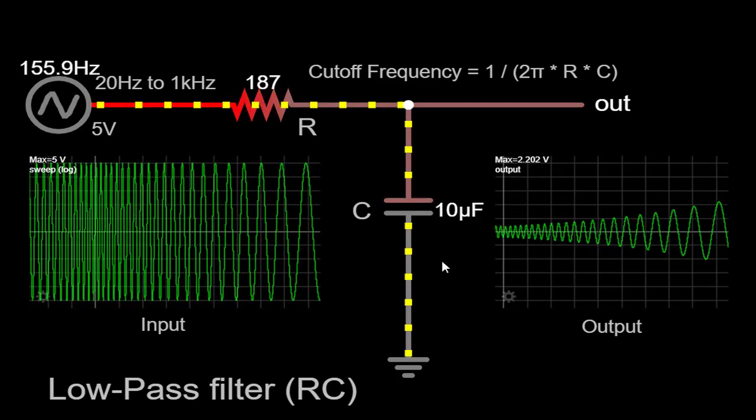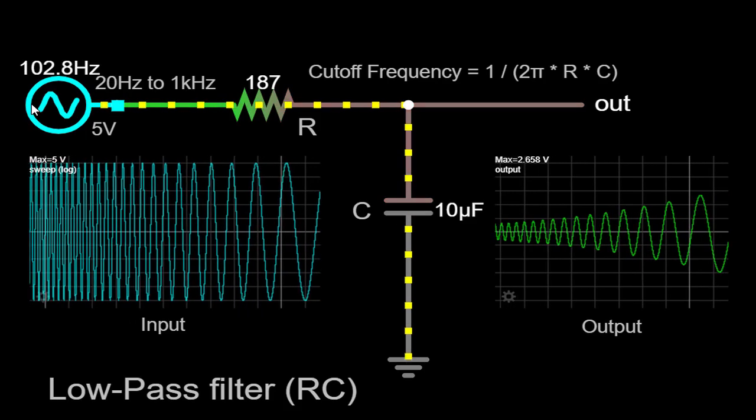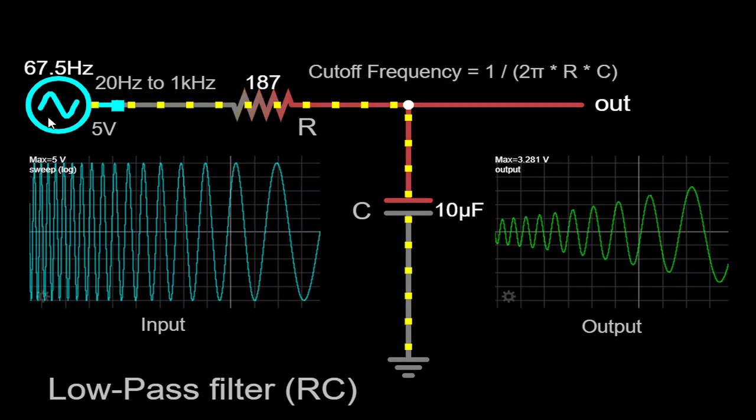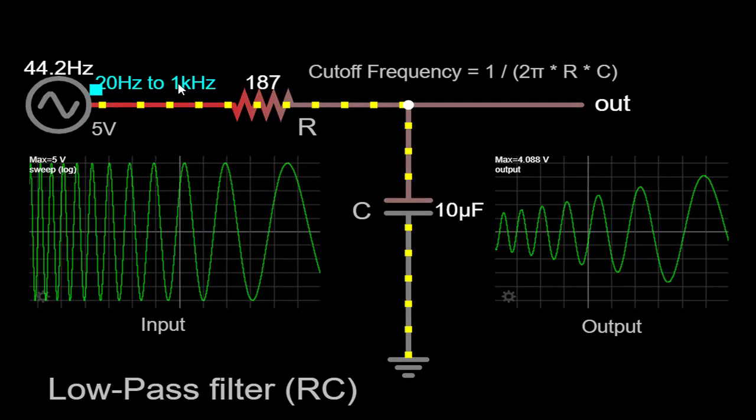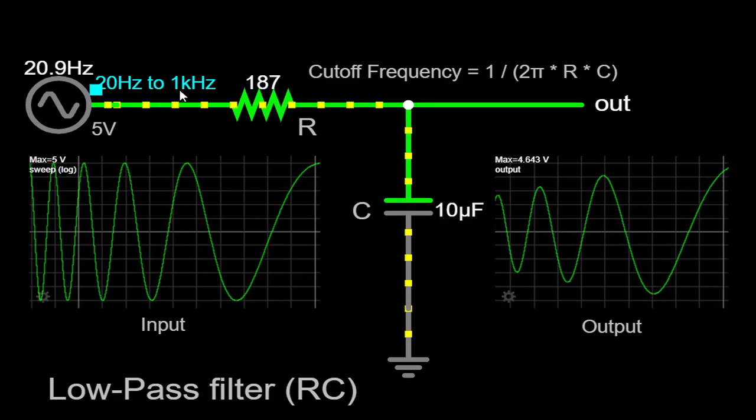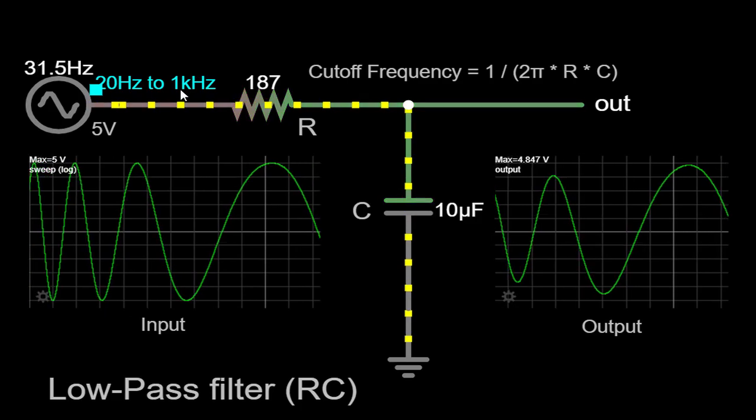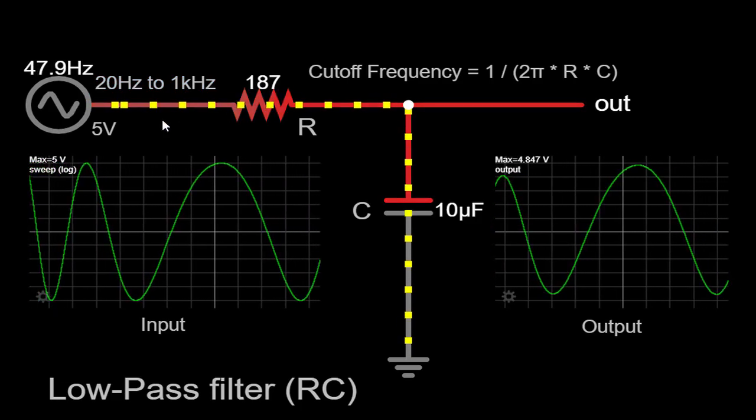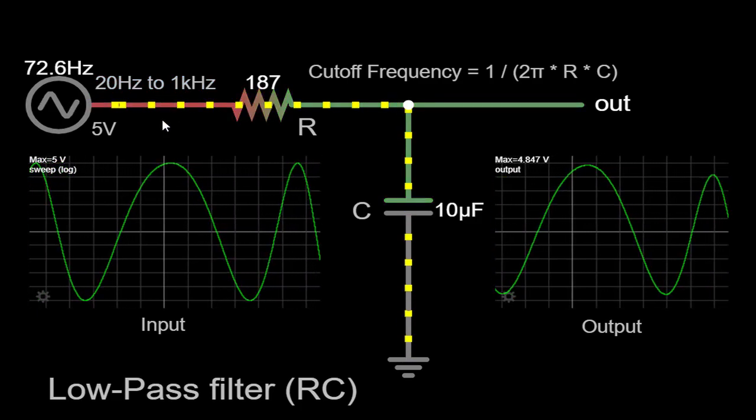During the simulation, we have set the sweep time to 100 milliseconds. This means that the frequency sweep will gradually progress from 20 hertz to 1 kilohertz over a span of 100 milliseconds. By doing so, we can effectively capture and analyze the circuit's behavior over time as the frequency changes.